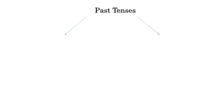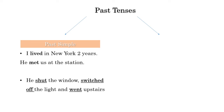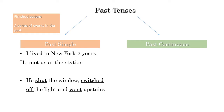First, the past tenses. The past simple is an action that began and finished in the past. For example: I lived in New York for two years — it's finished. He met us at the station. He shut the window, switched off the light, and went upstairs. It's a finished action, or maybe a series of events in the past.